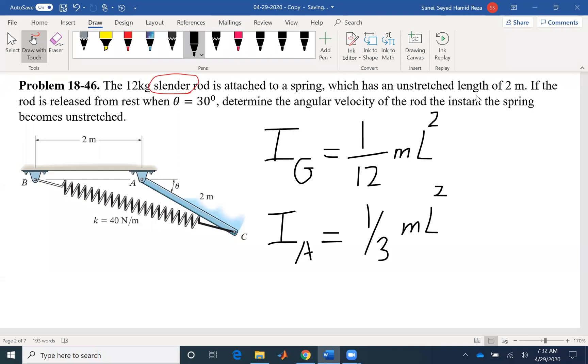The spring has an unstretched length of 2 meters. If you look at the problem, we can see based on that definition, this one is stretched. This is higher than 2 meters. If the rod is released from θ = 30°, determine the angular velocity of the rod the instant the spring becomes unstretched.